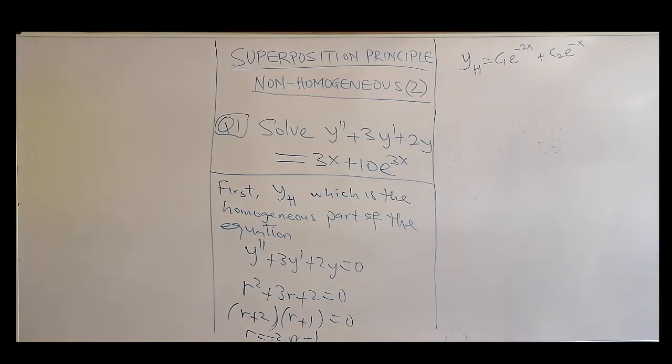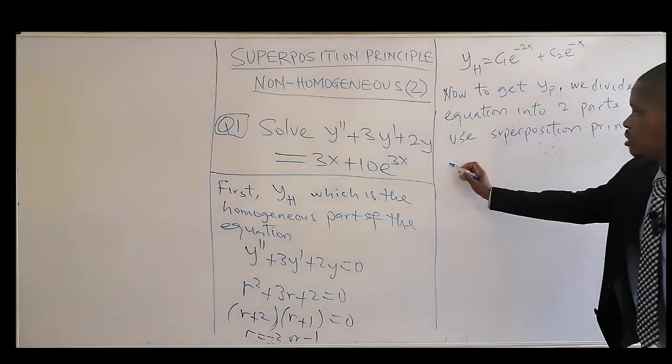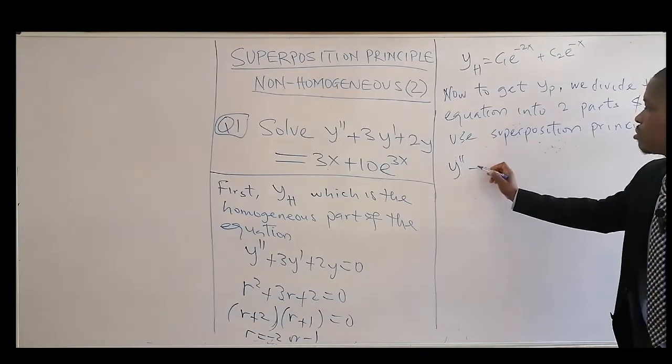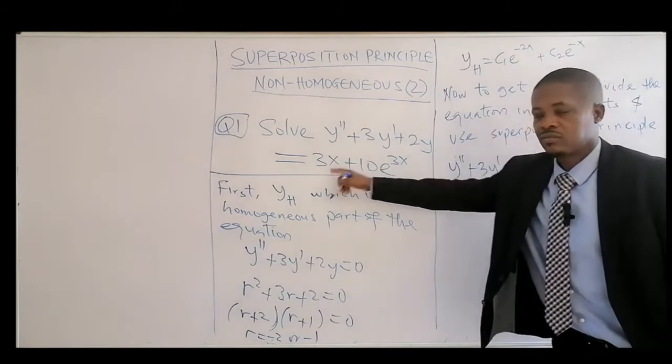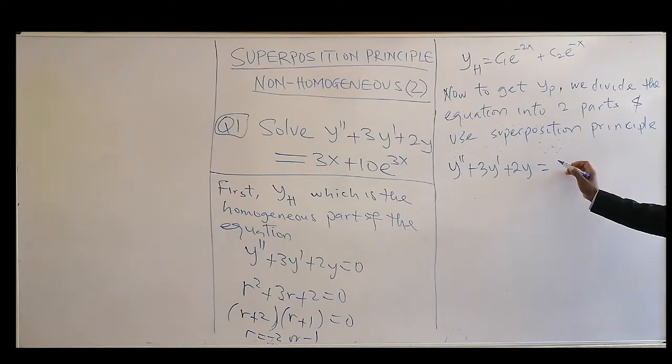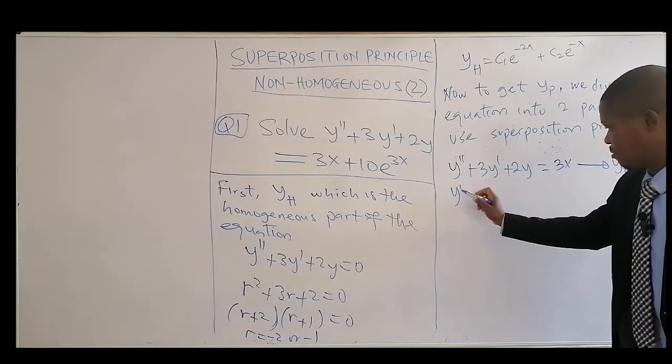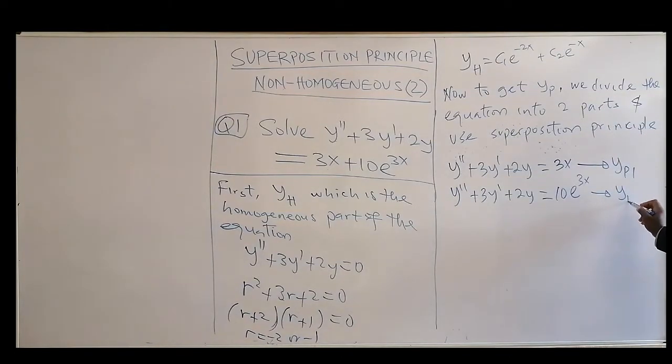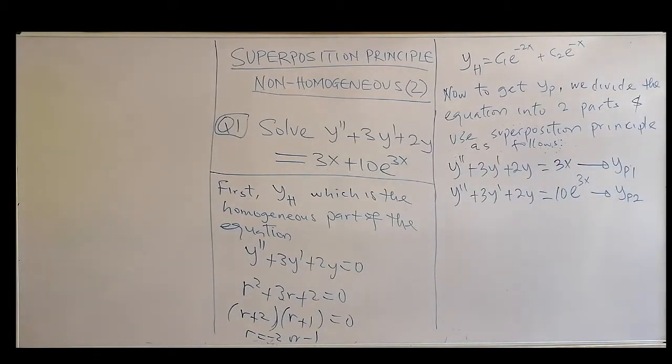Then we can write the homogeneous solution as C₁e^(-2x) + C₂e^(-x). So that's that. Now we get the particular solution. We divide the equation into two parts. Very simple. This will be Y double prime plus 3Y prime plus 2Y equal to the first part, f1(x) = 3x. And for this one you can get the YP1.